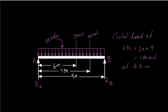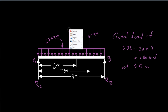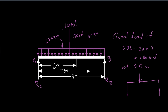Draw the equivalent load of this UDL as a point load. The 180 kN acts as a point load at 4.5 meters. So the effective force system has 180 kN, 30 kN, and 40 kN acting downward, with reactions RA and RB.